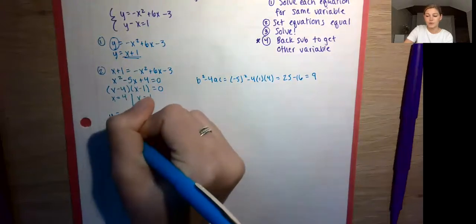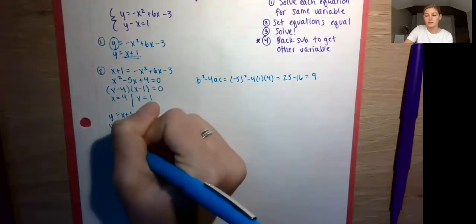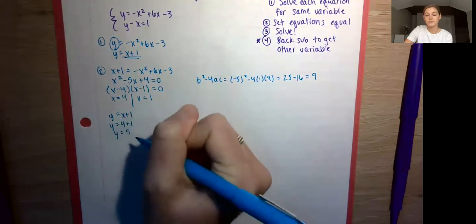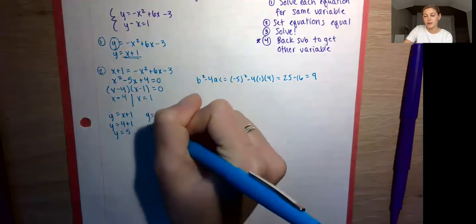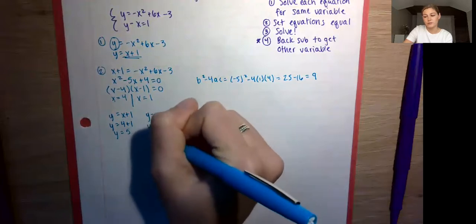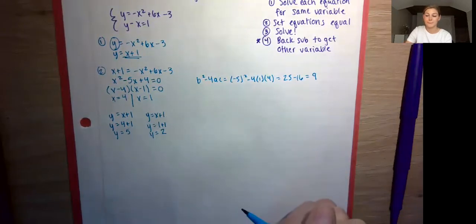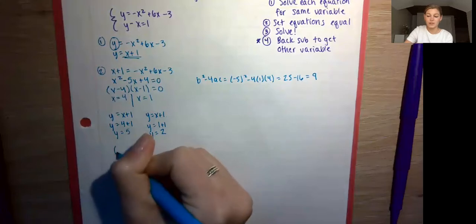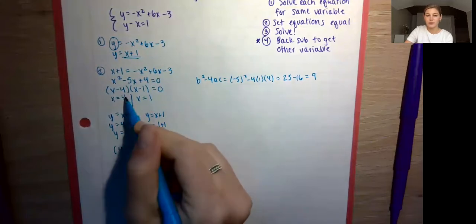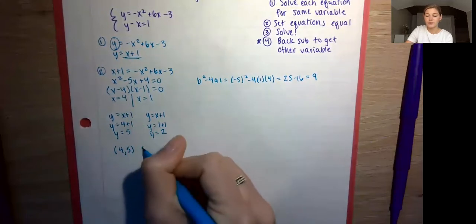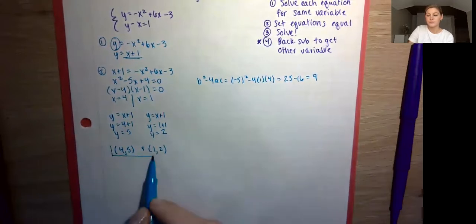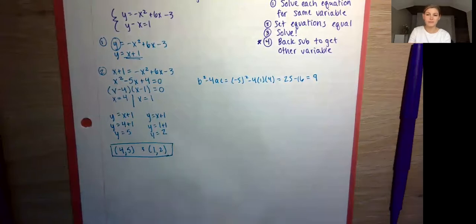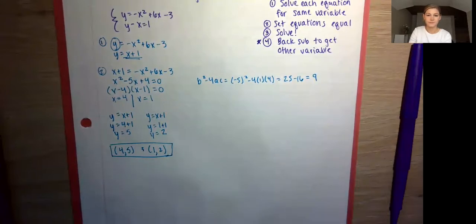So our solutions are (4, 5) and (1, 2). Does this match what we found graphically? Yes, it does — we have two points of intersection.